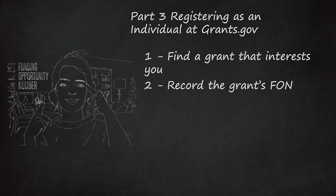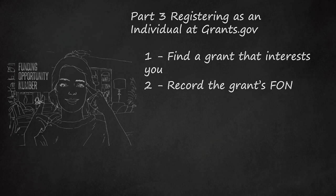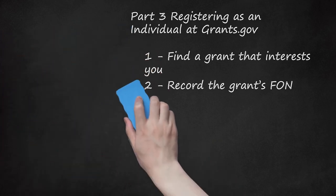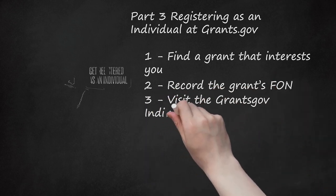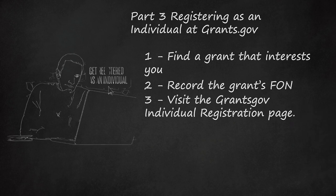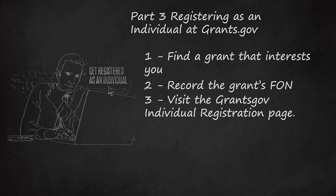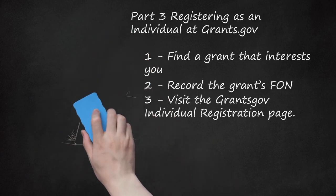Be careful to record the FON correctly, as these labels are lengthy. For example, the FON for one particular grant for a Community Economic Development Project is HHS-2017-ACF-OCSE-1213. Be sure to include all letters and numbers accurately. When you are ready to proceed, visit Grants.gov and follow the links to Applicants and then Individual Registration, then click the button to get registered as an individual. You will then be prompted to enter the FON for the grant you are applying for. After entering the FON, click the Register button. Before registering, make sure the grant is available to individuals, or you will receive an error message when you click Register.